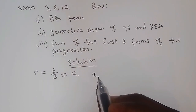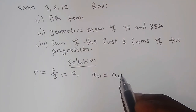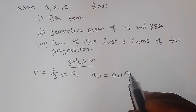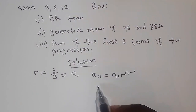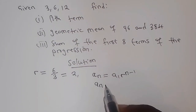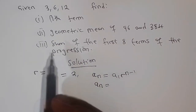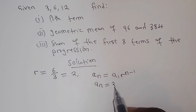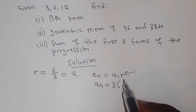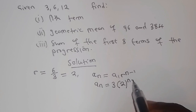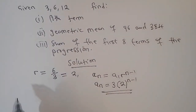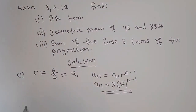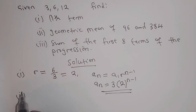From there we apply the general formula: aₙ equals a₁ multiplied by r to the power n minus one. So the nth term formula gives us aₙ equals 3 multiplied by 2 to the power n minus one. That is the answer to part one.